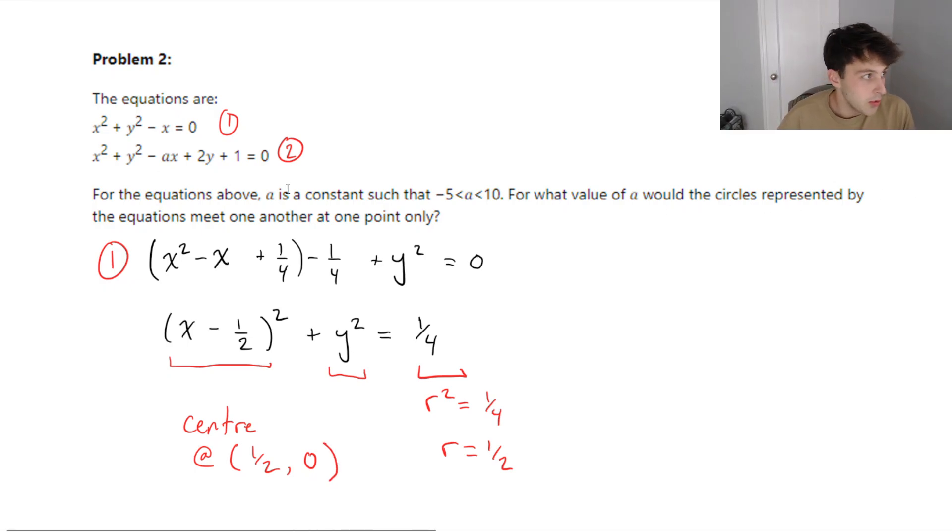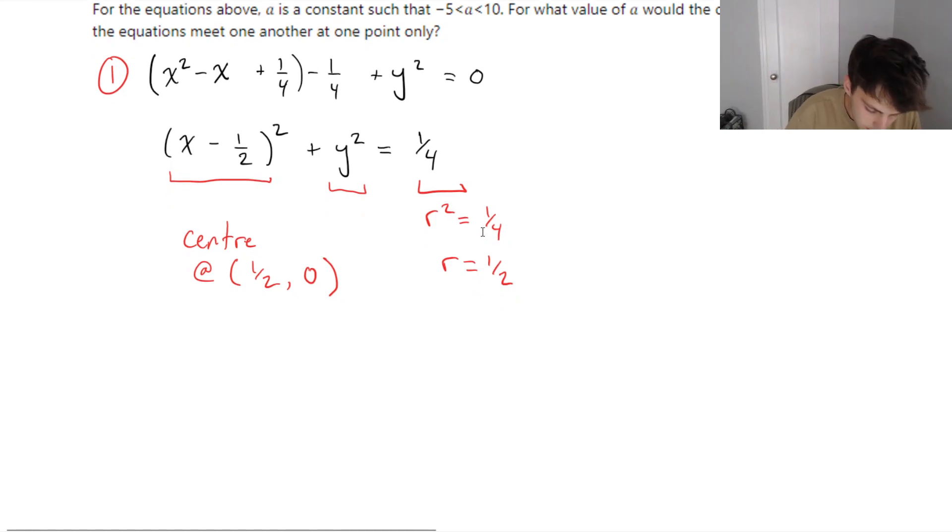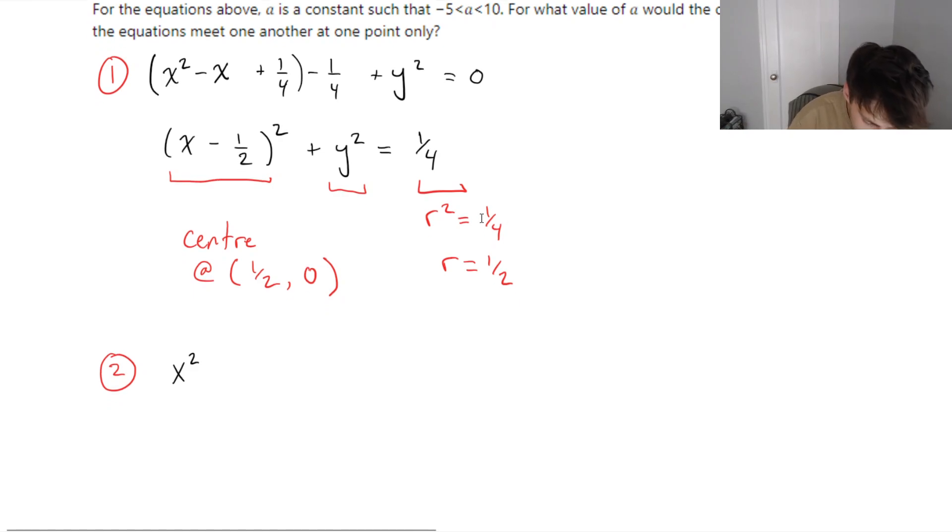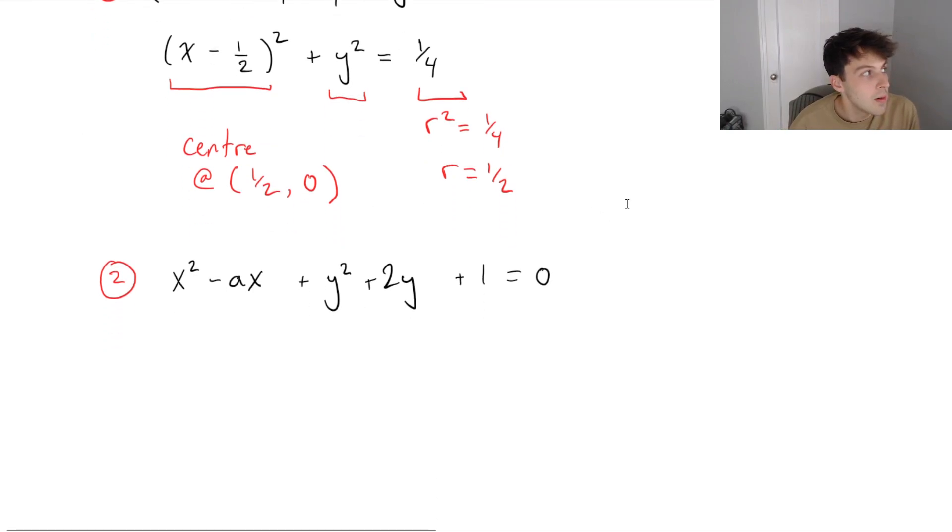Perfect. So, let's do the same thing for number 2. Okay, number 2. We have, and I'm just going to rearrange our x's together. So, x squared, and we've got a minus ax. x squared minus ax, and we've got plus y squared plus 2y. We also have a plus 1. And this all equals 0.